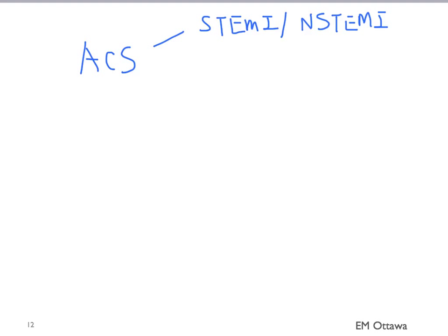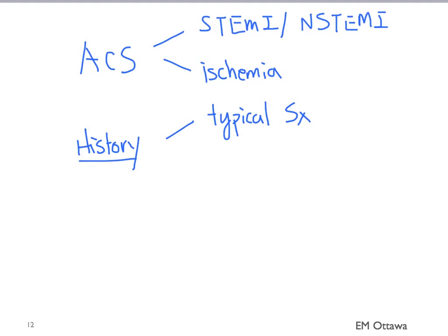In summary, we discussed the presentations of ACS. Remember that ACS includes myocardial infarction with or without ST elevation on EKG, and myocardial ischemia. History is key in the diagnosis of patients with ACS. While typical symptoms will be very helpful, patients can often have atypical symptoms — particularly in the elderly, female, and patients with diabetes. In Part 2, we'll discuss using the ECG to diagnose patients with ACS. Hope you find this useful. Thank you for watching.